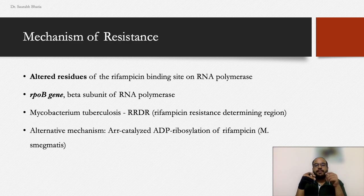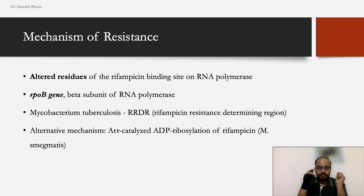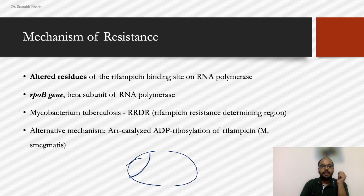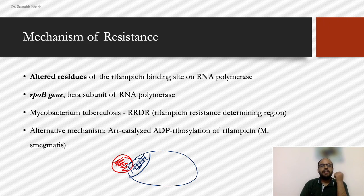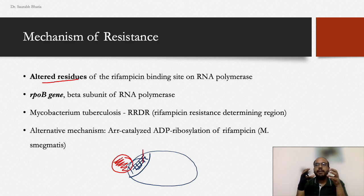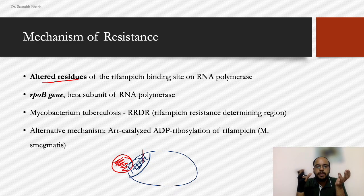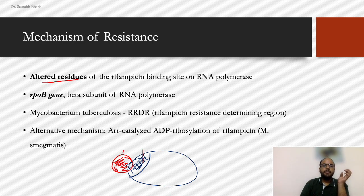Regarding the mechanism of resistance: rifampicin attaches to the beta subunit of RNA polymerase. If there are altered residues at the binding site — meaning the amino acid sequence which acts as the attachment site is changed — rifampicin cannot attach to RNA polymerase and thus cannot act as a bactericidal compound, leading to resistance.